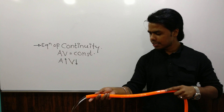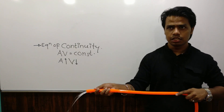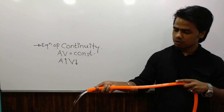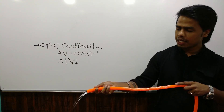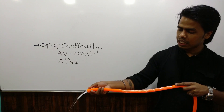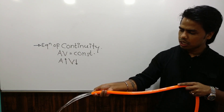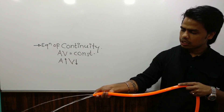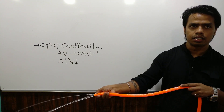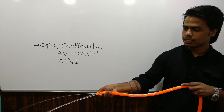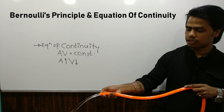Once I increase the area again, the speed of flow has reduced. Now I will reduce the area — the speed of flow has increased. This is the equation of continuity: AV is constant.